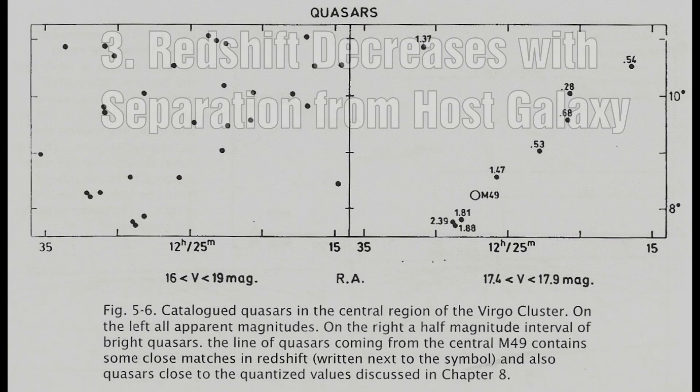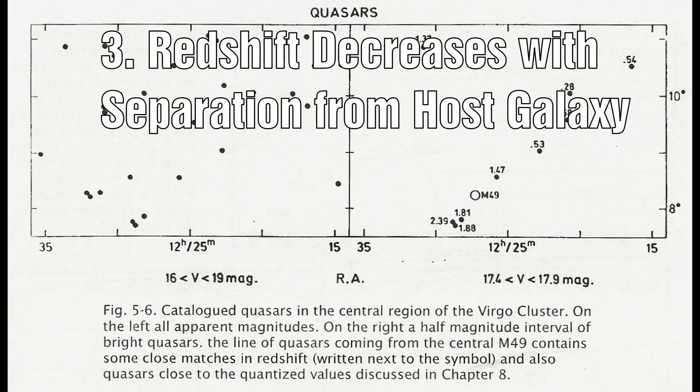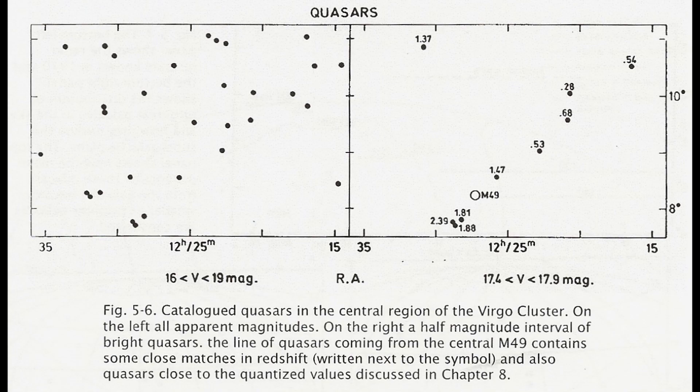Number 3: Redshift along the line from the central galaxy starts high and decreases as you move further outwards. This tends to indicate that as the quasars move further out, something is affecting their redshift in clear jumps, which may in turn be related to how the quasar is evolving into a galaxy.